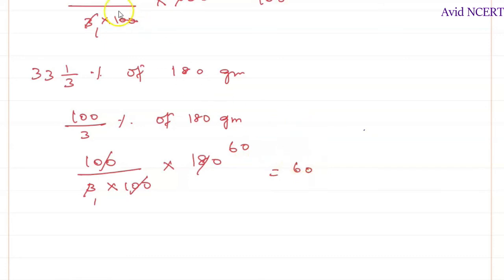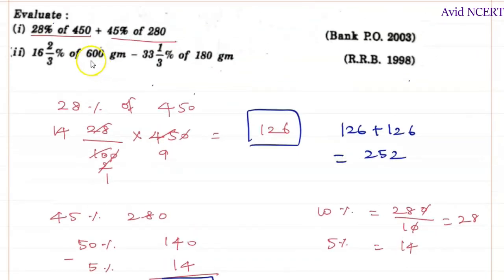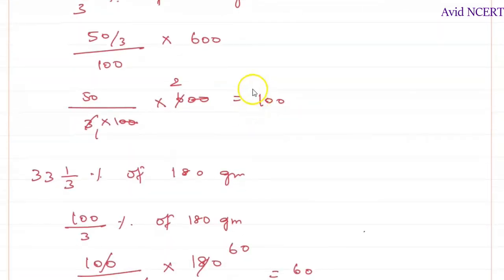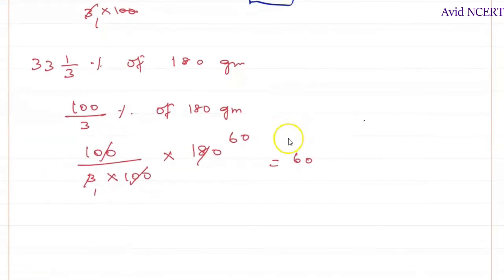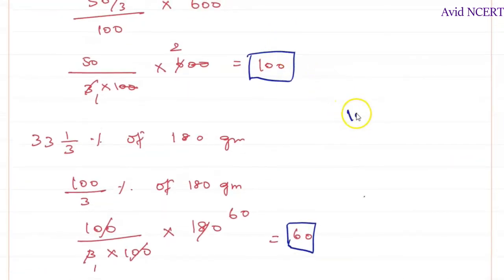Which equals 60. Now the question is 16 and 2/3 percent of 600 minus 33 and 1/3 of 180. We got this answer which is 100, and this answer is 60. Now we subtract these two, which is 100 minus 60 equals 40. Don't forget to mention the units: grams.